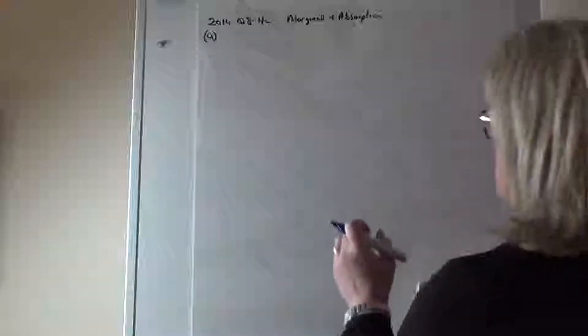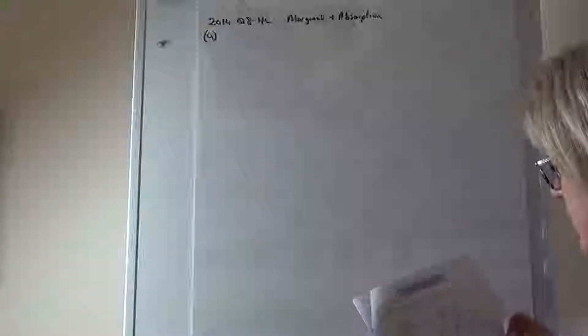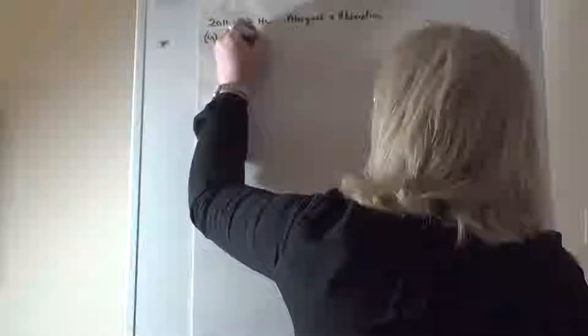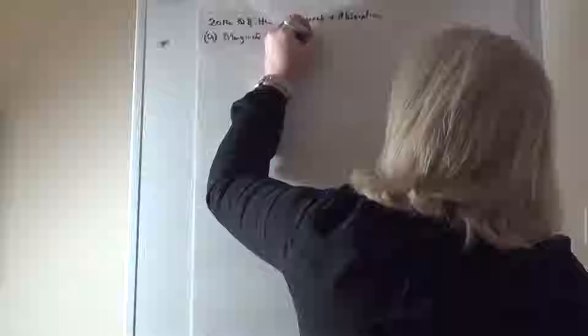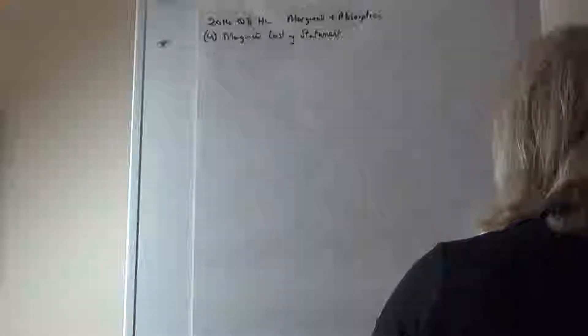We're going to start looking at 2014 question 8 higher level, which was marginal costing and absorption costing. On the question you're given some details about Murphy Limited, selling 16,000 units and the various sales and cost figures. You are first to calculate the company's break-even point and margin of safety, so the marginal costing statement has to be done first.